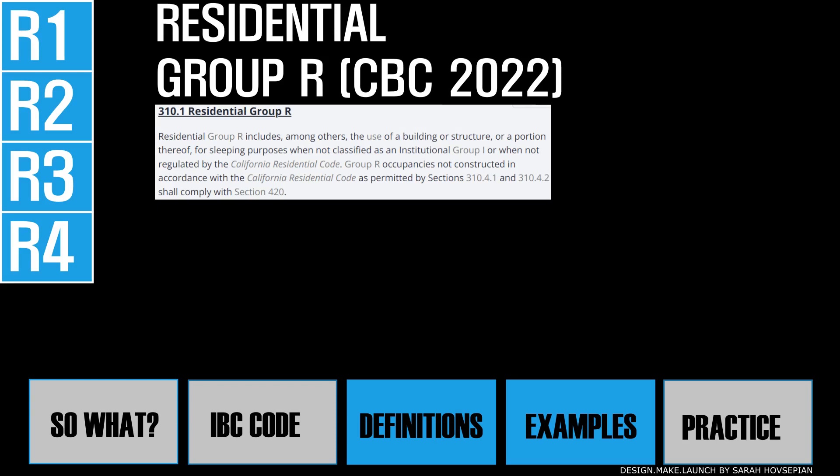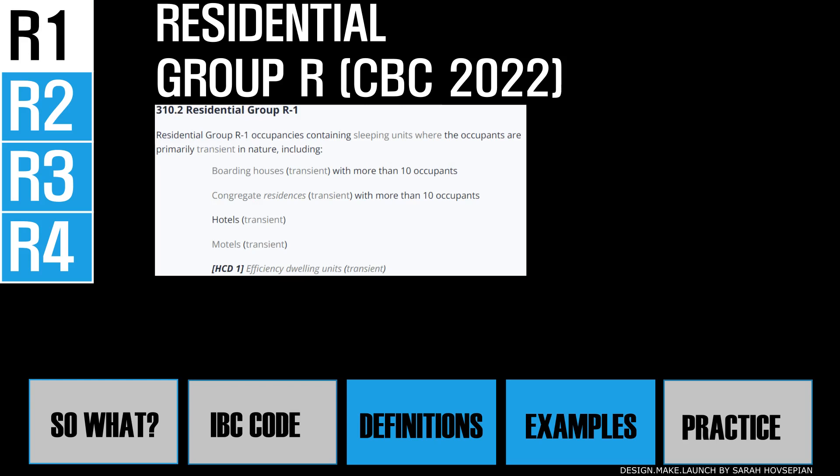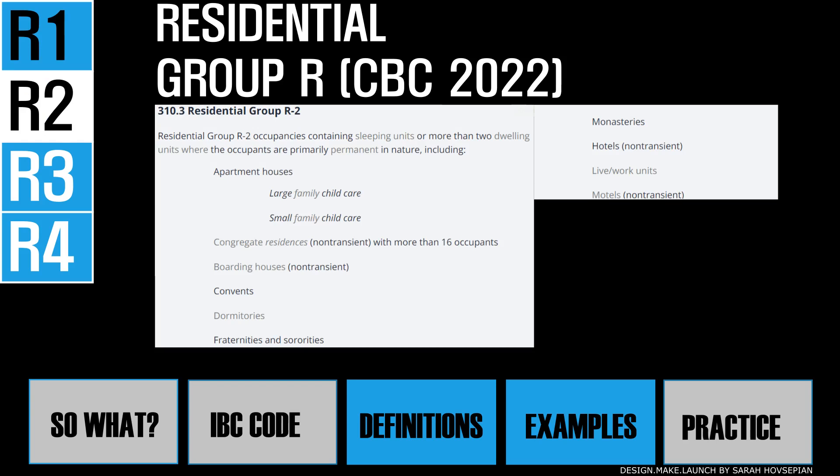R for residential is the use of a building or structure or portion thereof for sleeping purposes. This occupancy is divided into R1 through R4 based on the total number of occupants. A key criteria is that occupants are sleeping in the building. R1 occupancy types contain sleeping units where occupants are primarily transient in nature — hotels and motels would be group R1. Because people are transient, R1 assumes occupants are not familiar with their surroundings and therefore the building is designed accordingly for life safety. R2 occupancies contain sleeping units or more than two dwelling units where occupants are primarily permanent in nature.